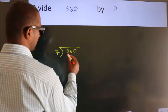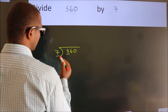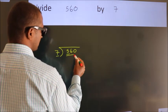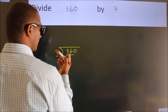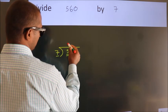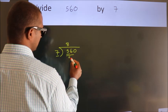Here we have 5. Here, 7. 5 is smaller than 7, so we should take two numbers: 56. When do we get 56? In the 7 times table. 7 times 8 is 56.